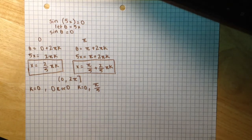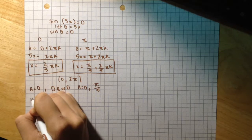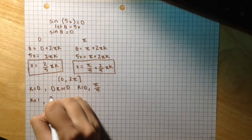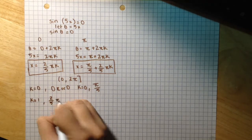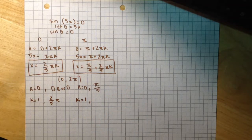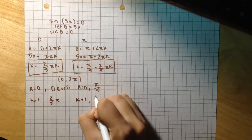So if I substitute 1 for k and plug 1 into this equation, I get 2/5 π. And if I substitute 1 into this equation, I get 3π/5.